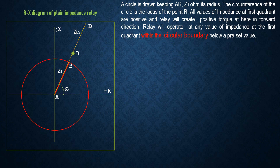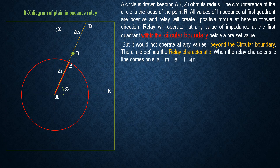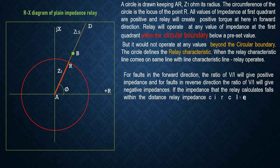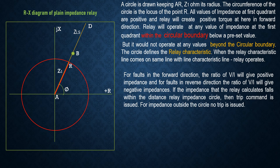The relay operates at any impedance value within the circular boundary below a preset value, but does not operate beyond the circular boundary. The circular boundary defines the relay characteristics. When the relay characteristics line coincides with the line characteristics line, the relay operates. For faults in the forward direction, V/I gives positive impedance; for faults in the reverse direction, V/I gives negative impedance. If the impedance falls within the distance relay impedance circle, a trip command is issued; for impedance outside the circle, no trip is issued.